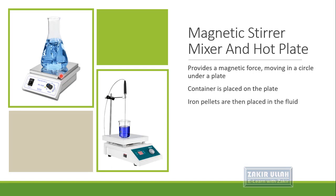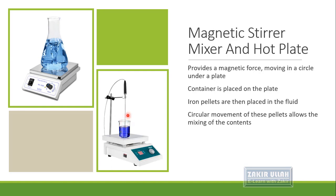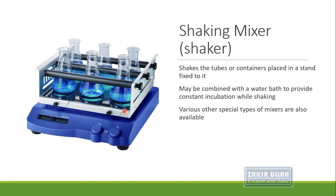Stirring can be done with two types of elements: iron pellets introduced inside the fluid, where their circular motion allows mixing of the solution; or a rod which helps in movement and mixing of the solution. The last type of mixer is the shaker mixer or shaker, which shakes the tubes or any container placed in a stand. It is also combined with a water bath or an incubator, functioning as a shaking incubator or shaking water bath.